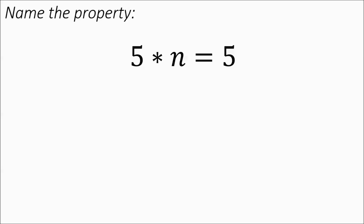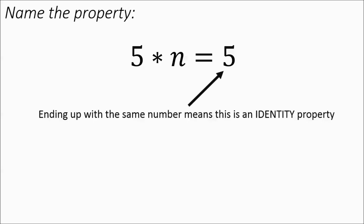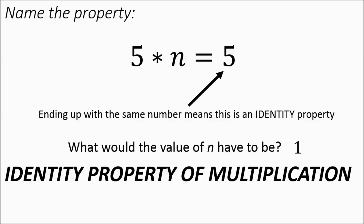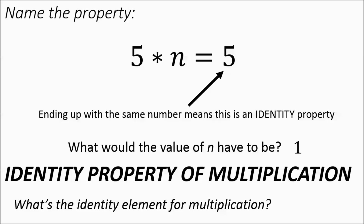Now we have 5 times a number equaling 5. You're ending up with the same number — you've got a 5 on the left and a 5 on the right — that means it's some kind of identity property. The value of n has to be 1 because 5 times 1 equals 5. That's the identity property for multiplying. The identity element for multiplying is that 1 — identity element is an important term you need to know.